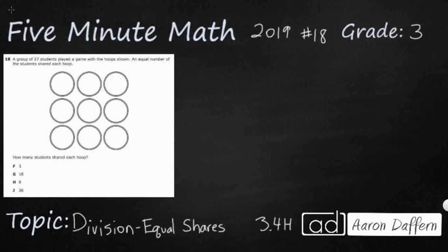So we have a group of 27 students and they are not pictured. We're just gonna have to imagine 27 students playing a game with these hoops and an equal number of students shared each hoop. So we have equal shares here. Whenever we see equal number, whenever we see equal groups, then oftentimes this word each is also going to give us a clue.